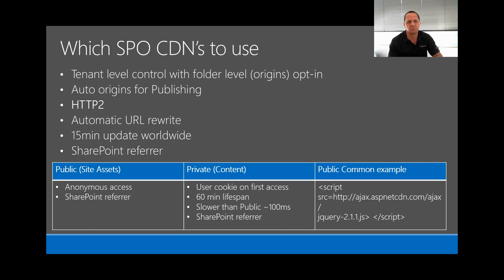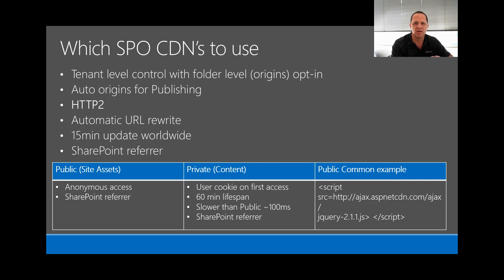So which CDN should you use? There are more than just public and private — those are the Microsoft SharePoint ones offered in Office 365. There is a third one I refer to as the public common CDN. For example, if you're using a standard Ajax JavaScript file, why pull it from your own library or put it into your own CDN? Use the public common CDN instead — for example, ajax.aspnetcdn.com/ajax and then the version of the file you need.